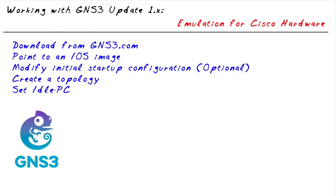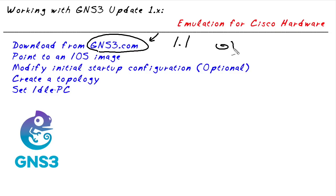To get up and running with the new GNS3, the first thing we need to do is download it from GNS3.com. If we go to the older website GNS3.net, it will redirect us over to GNS3.com. For our demonstration, I'm going to use version 1.1, which installs everything — including Wireshark, the SolarWinds add-in, GNS3, the whole kit and caboodle. With the install of GNS3, it's just say yes to everything, and you'll have GNS3 and all subcomponents installed on your Windows computer.